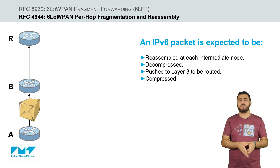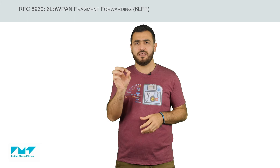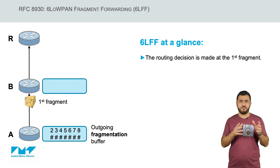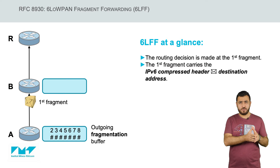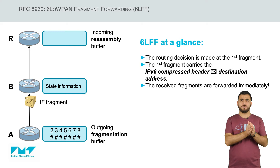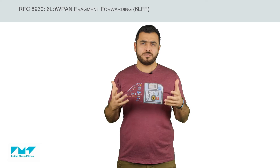Today, I will introduce you to an alternate approach called 6LoWPAN Fragment Forwarding, whereby an intermediate node forwards a fragment without reassembly. The routing decision is made on the first fragment of the IPv6 packet, which has the IPv6 header and thus the IPv6 destination address. The first fragment is forwarded immediately and some state is kept in the intermediate nodes to enable forwarding the subsequent fragments along the same path toward the destination node.